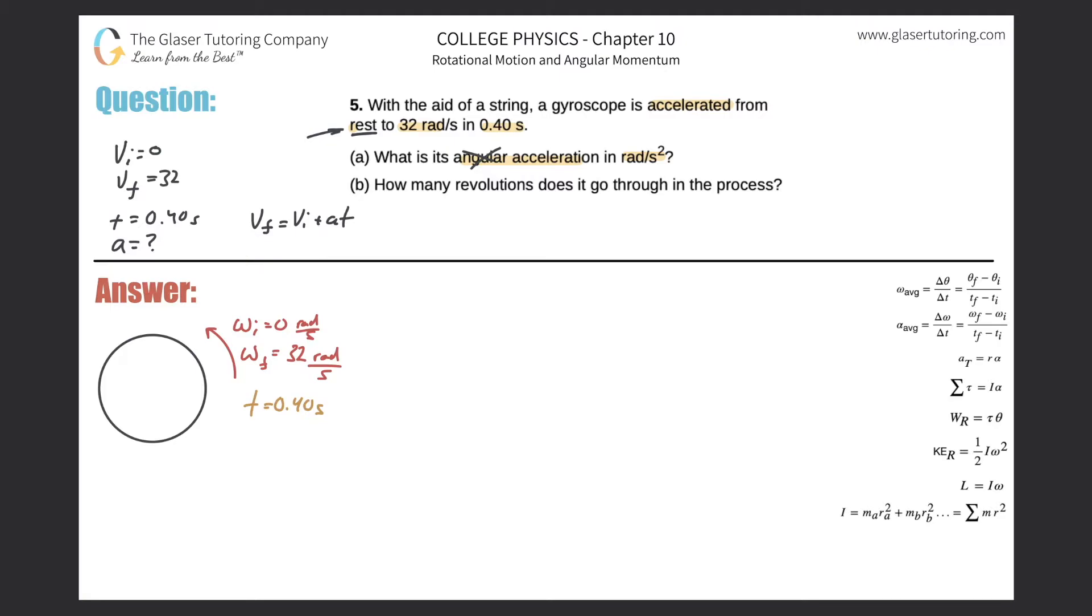The formula I need here is the final angular velocity will equal the initial angular velocity plus the angular acceleration multiplied by time. All we have to do now is solve this for alpha. Doing the algebra quickly, this would be omega_f minus omega_i all over t.